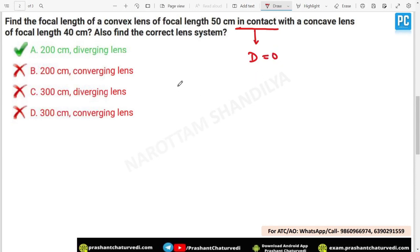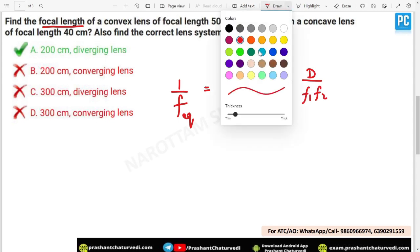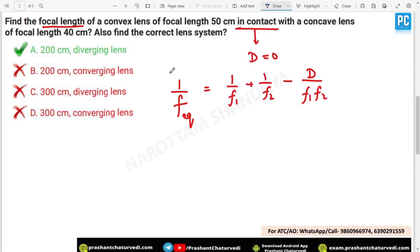The final formula, because they had asked you the focal length only, the final equivalent focal length will be 1 upon f1 plus 1 upon f2 minus distance upon f1, f2. This formula I had already told you. Majorly what happens, students only use this much. They do not remember the part which is related to the distance between the lenses.